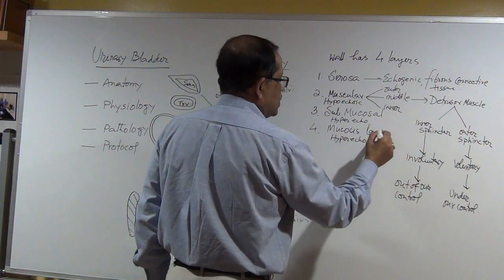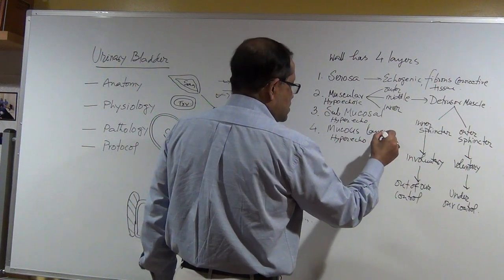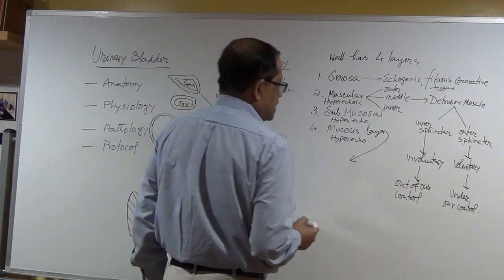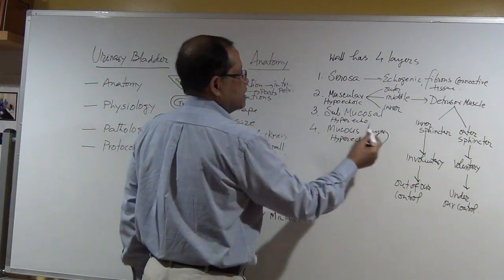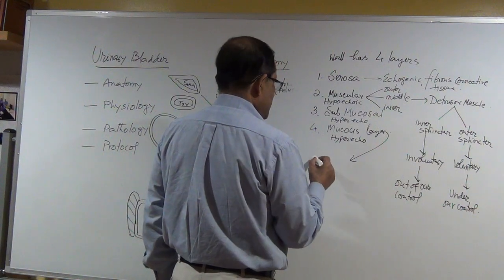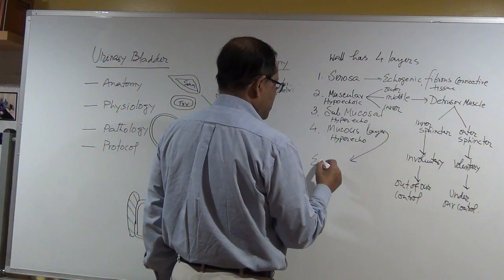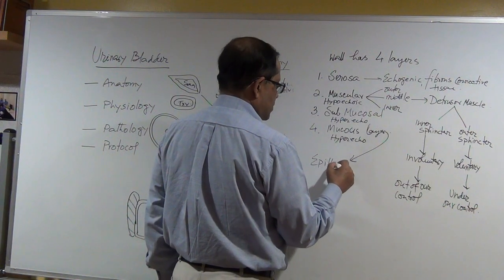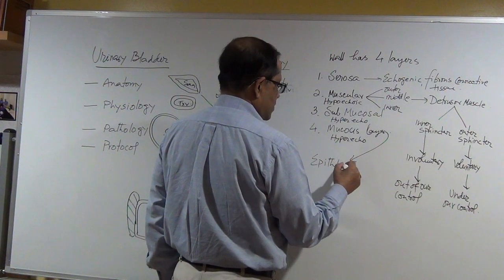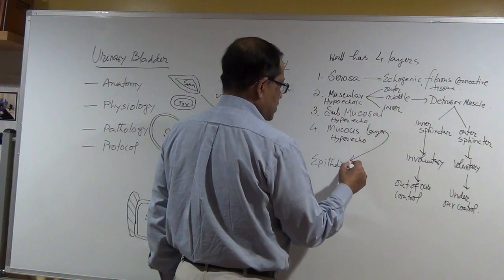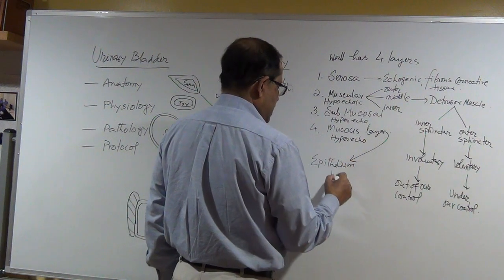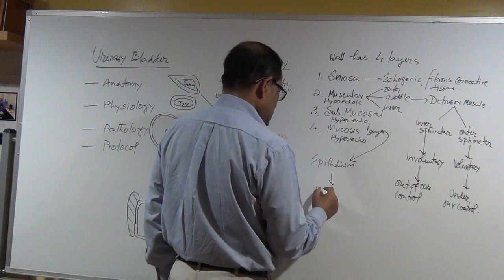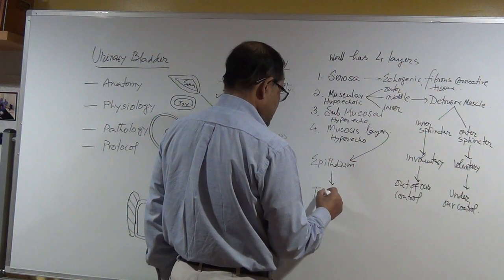The detrusor muscle's middle layer has a role in forming the inner and outer sphincters. The inner sphincter is involuntary — it is out of our control. The sub-mucosal and mucosal layers are hyperechoic. The mucosal epithelium is known as transitional cell epithelium.